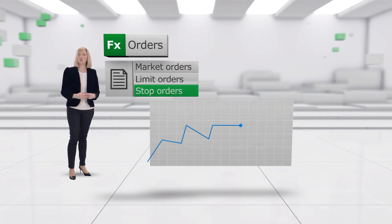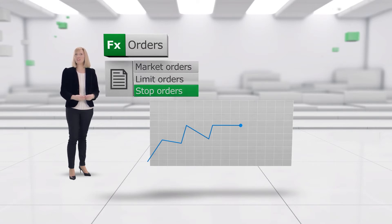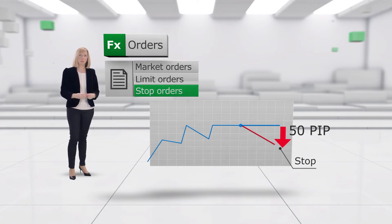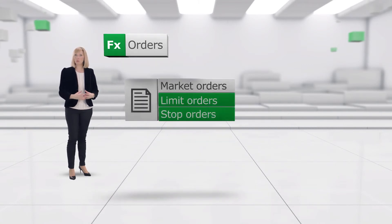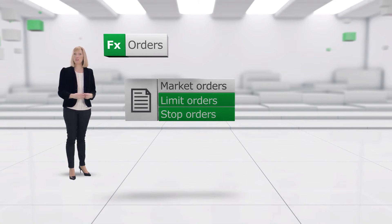Stop orders are traditionally used as a risk management tool to protect a position against an extensive loss. Stops are always placed at levels worse than where the market is currently trading. For example, if you want to sell should the market drop by 50 pips, you would place a stop order to sell 50 pips below the current market price. Both limit and stop orders are only executed and transformed into a position if and when the market reaches the specific price at which the order is placed within the said runtime of the order.